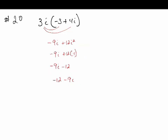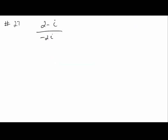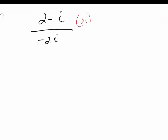For number 27, again, the answer has to be in A plus B·i form. What we're going to do is multiply the numerator and the denominator by the conjugate. That's going to give us a real number in the denominator.